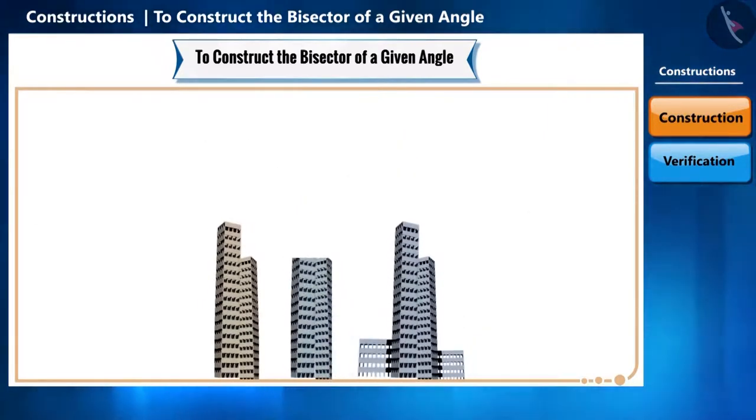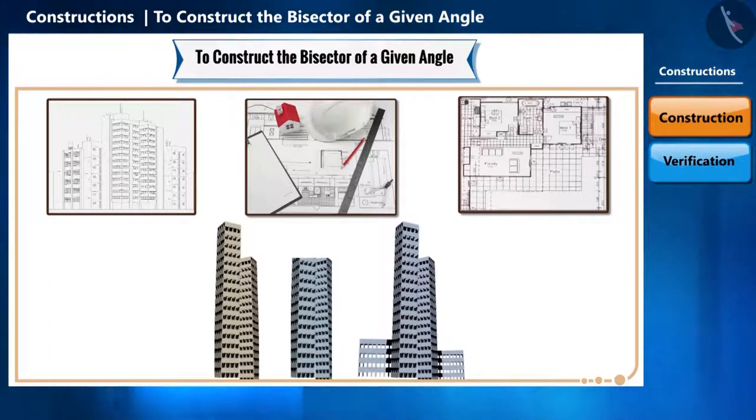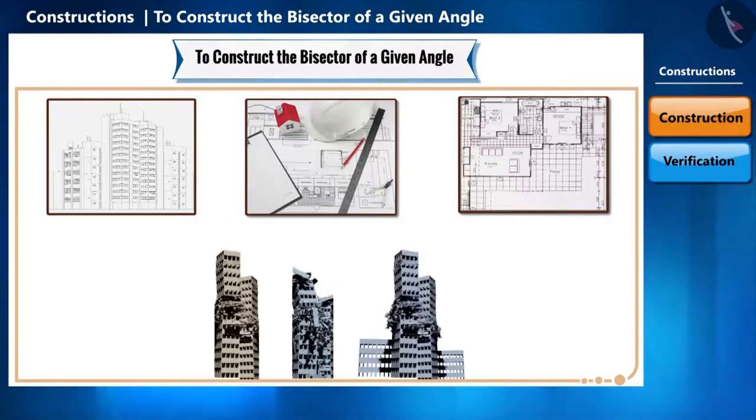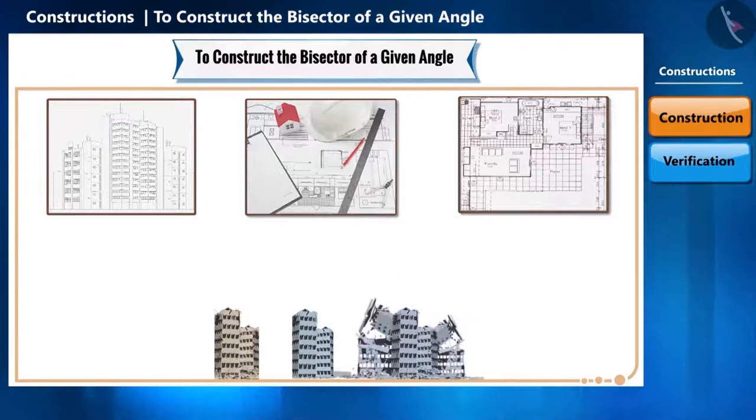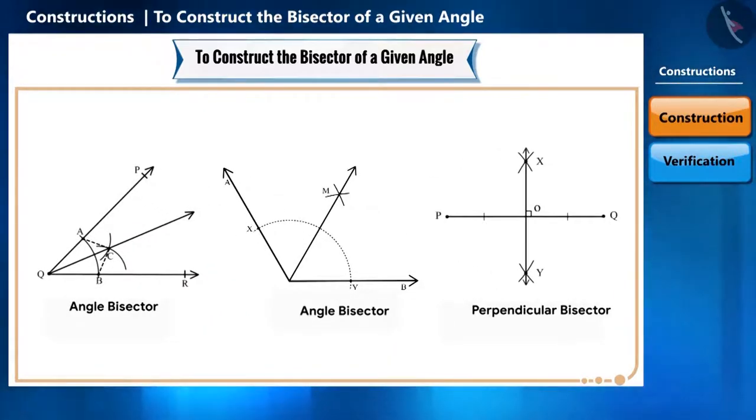To construct big buildings, we first prepare a blueprint. And if this blueprint is not accurate, will this building be built correctly? No. And to make the correct blueprint, we use these geometric constructions.